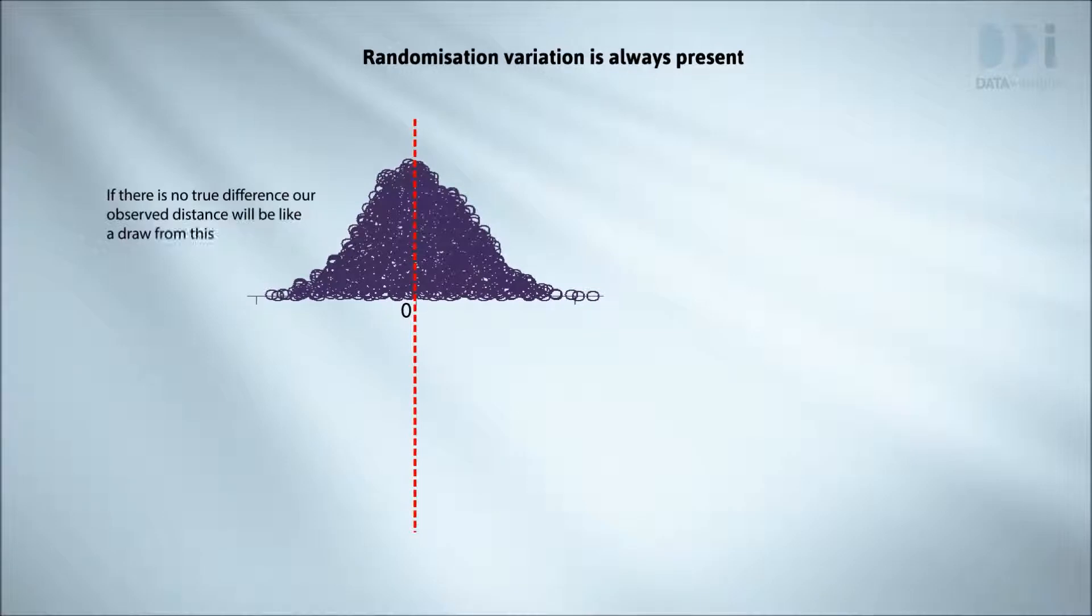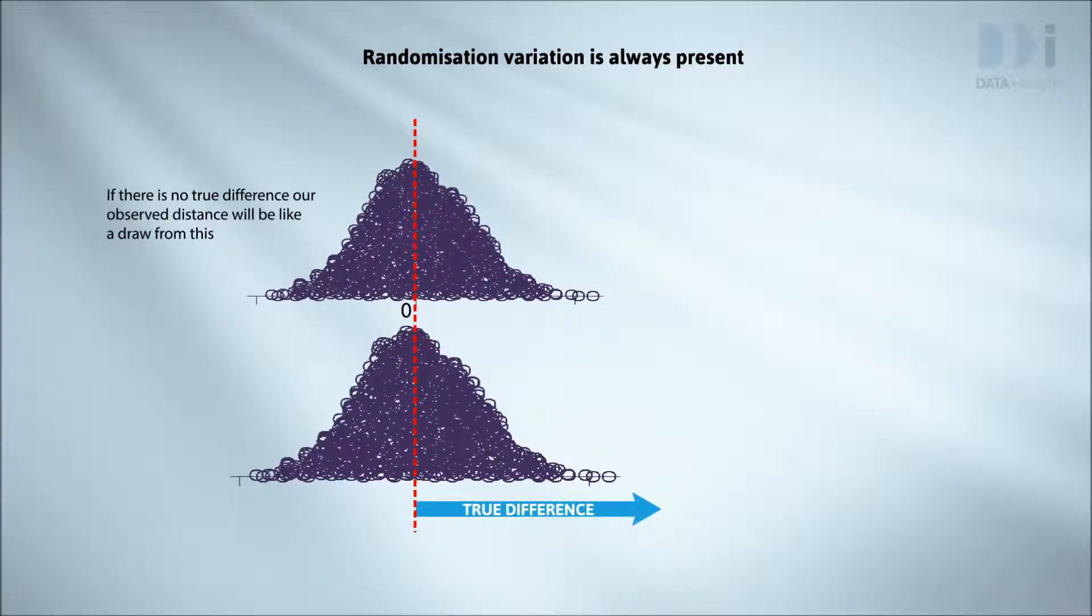Randomisation variation and other forms of random variation don't go away just because there's a true difference. Instead of variation centred at zero we then have variations centred around that true difference.